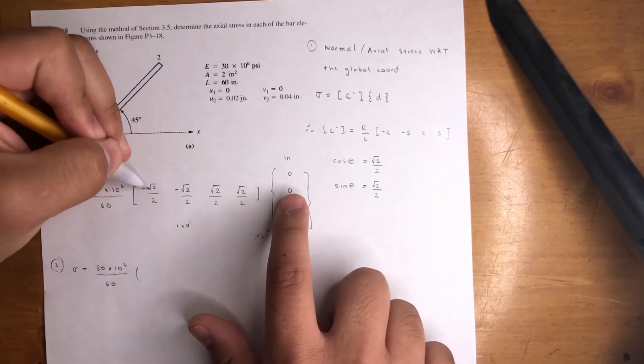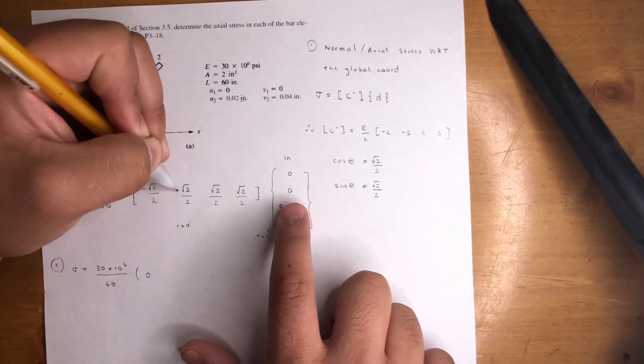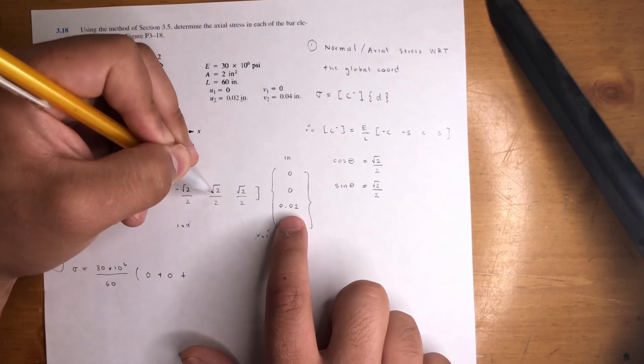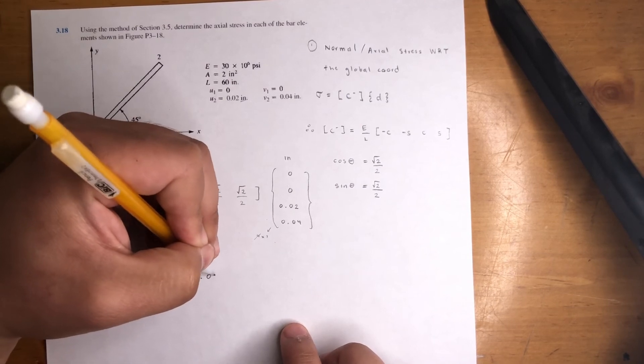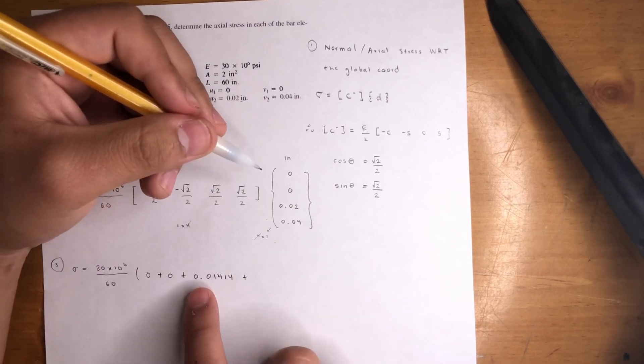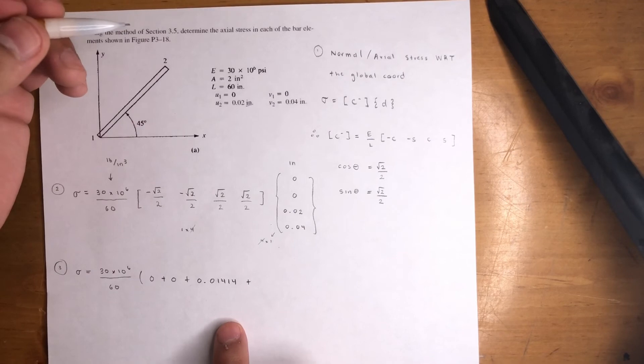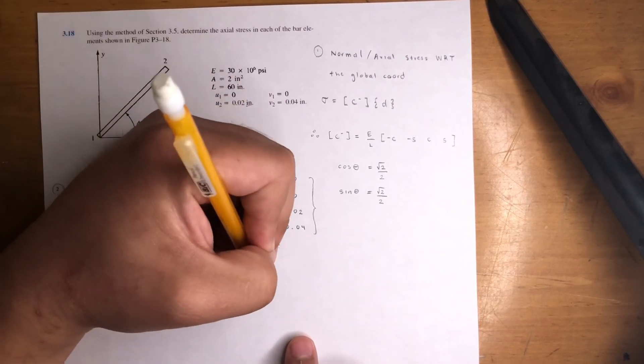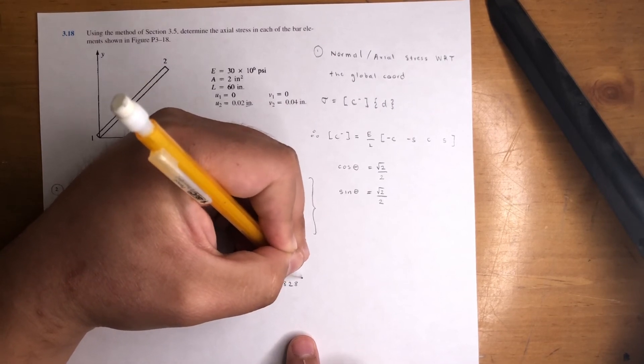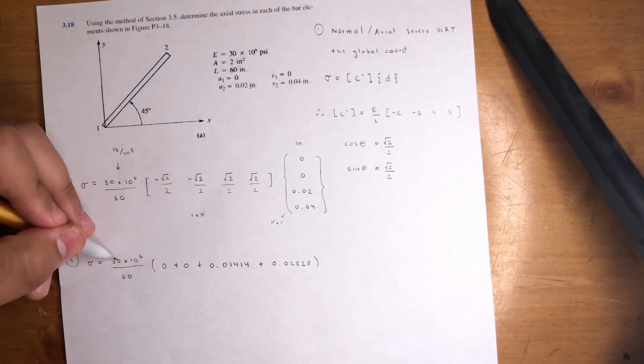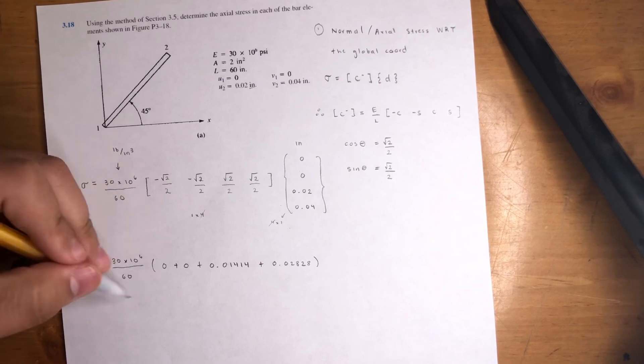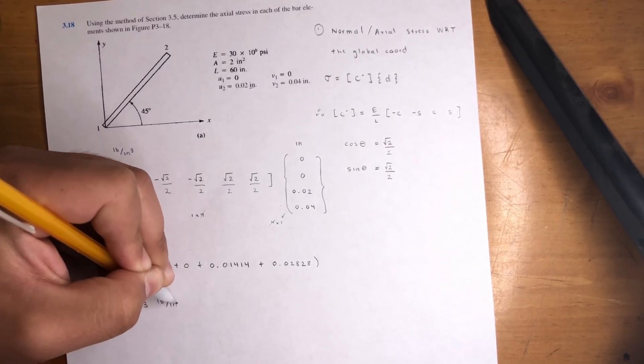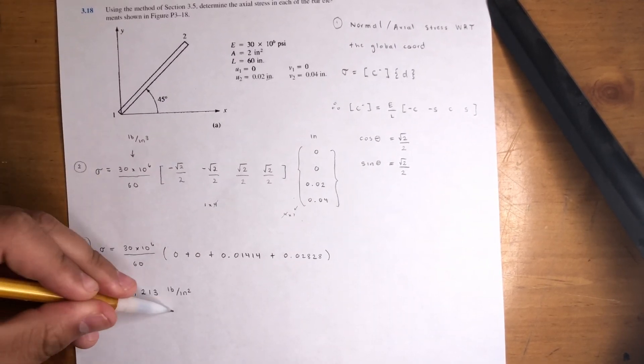And that is -√2/2 times 0, which is 0, plus -√2/2 times 0, which is 0, plus √2/2 times 0.02. Do the math, you'll get 0.01414. Plus, the more numbers you include after the decimal, the better. Finally, the next one: plus √2/2 times 0.04, that is 0.02828. Do the math, add all these four terms, multiply it times 30×10^6, and divide that number by 60. You will get for your sigma 21,213 pound per inch squared or PSI.